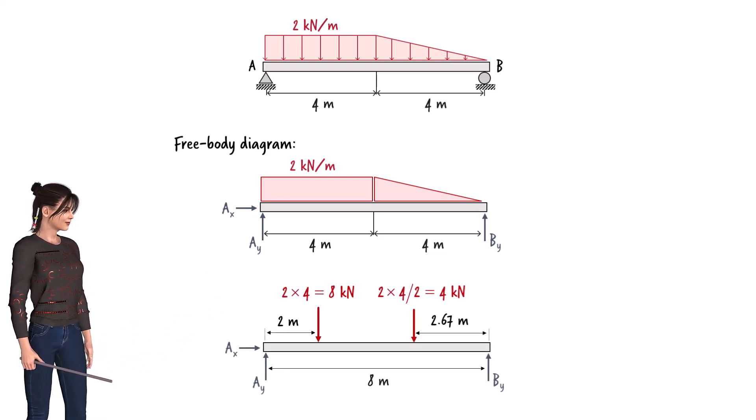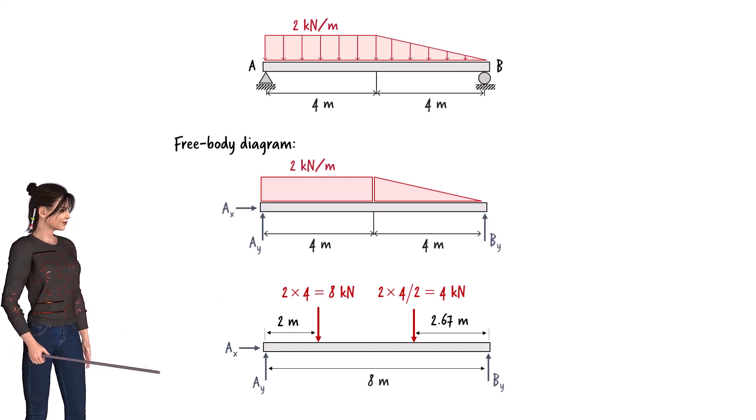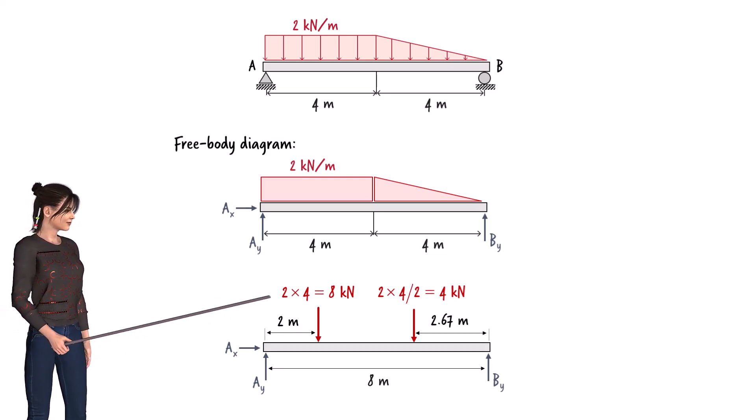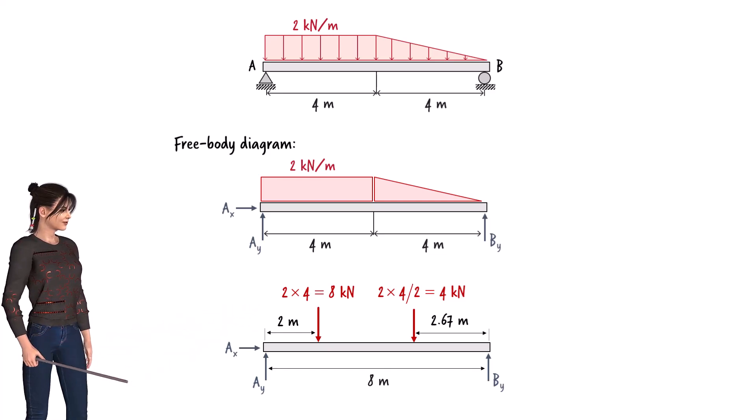Since the area of the rectangle is 8, we can replace the rectangular distributed load with a point load of 8 kN. The load is placed at the center of the rectangle, 2 m to the right of point A.